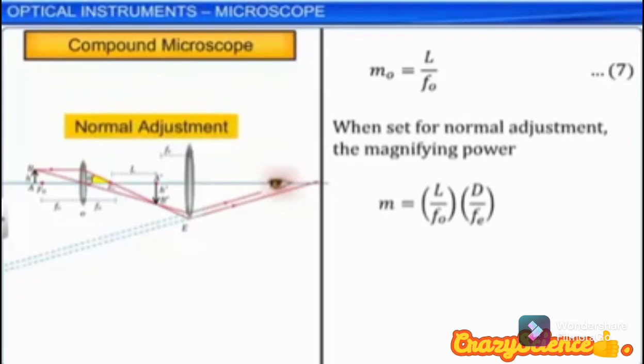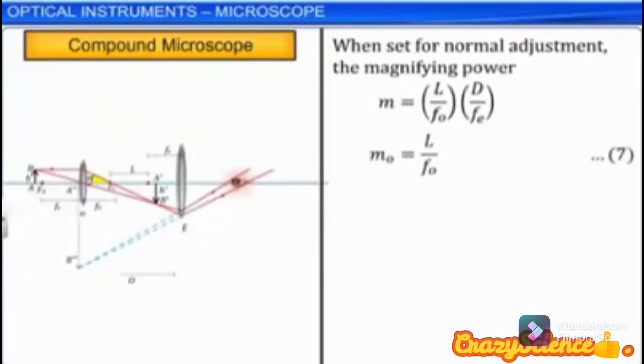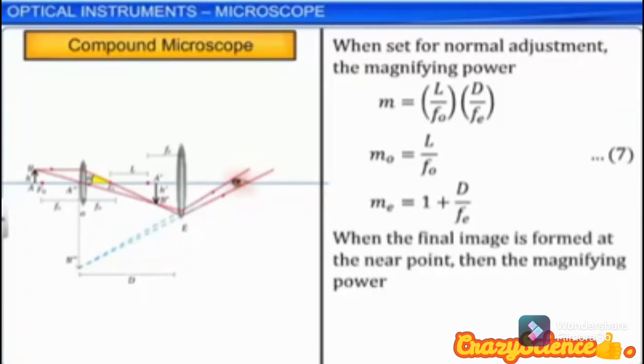The magnifying power is generally expressed in terms of X, where X is the number of times the size of the image appears to be when compared to the size of the object. For example, if a compound microscope is marked as 10X, then its magnification is 10, and it denotes the number of times the size of the image appears to be when compared to the size of the object.